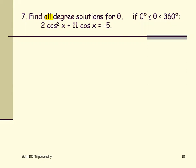This problem, we are going to find our degree solution for an angle theta. If theta is between 0 degrees and 360 degrees or within the first revolution, the equation is in the form of 2 cosine squared x plus 11 cosine x equals negative 5.